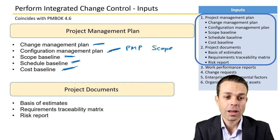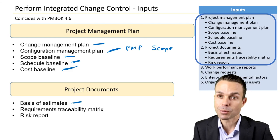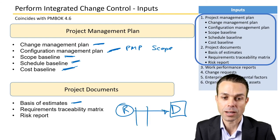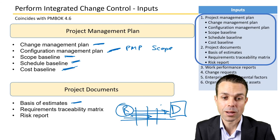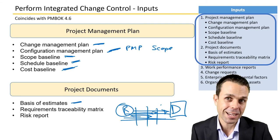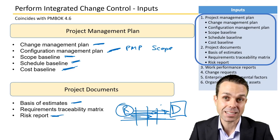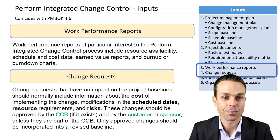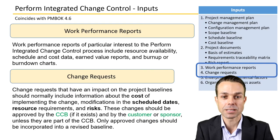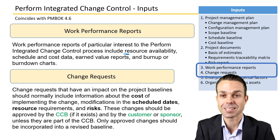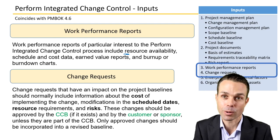We need to know the basis of what we've estimated: the requirements traceability matrix shows what the customer required initially versus what we are delivering, usually in a matrix format that matches them up. If that changes, we need to know about it. We might also have the risk report — what risks might change or be impacted by making a change to the project. Work performance reports may include resource availability, schedule and cost data, earned value, or burndown charts showing the impact on the project schedule — all things to consider when making a change.